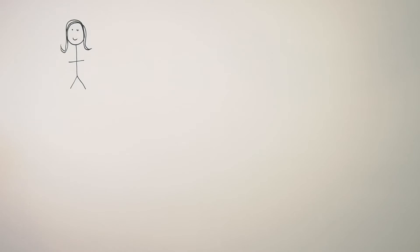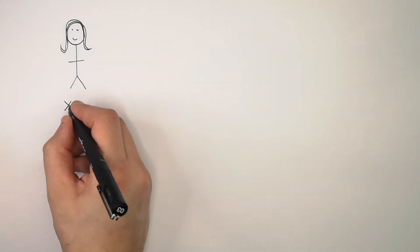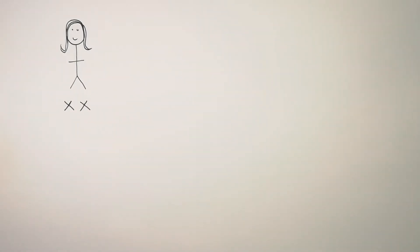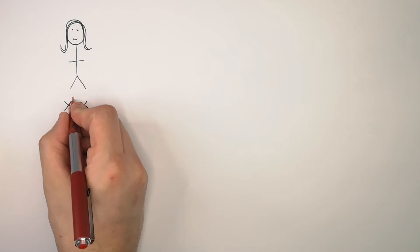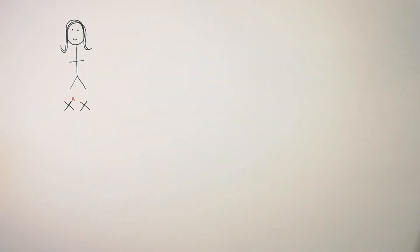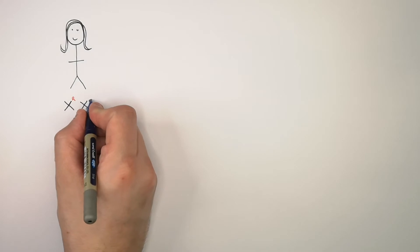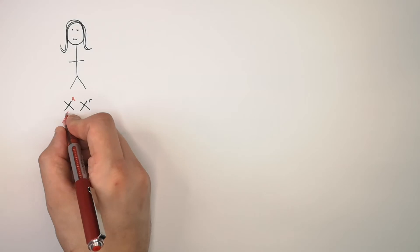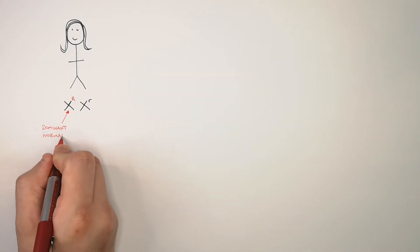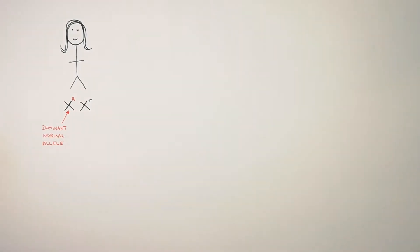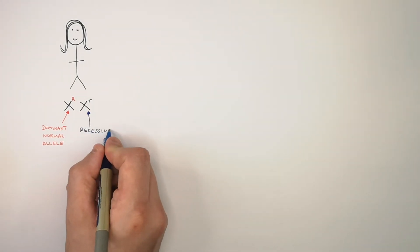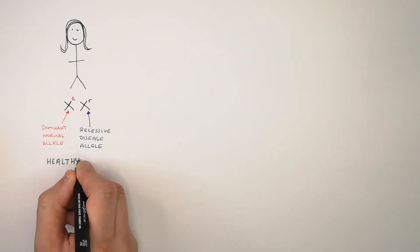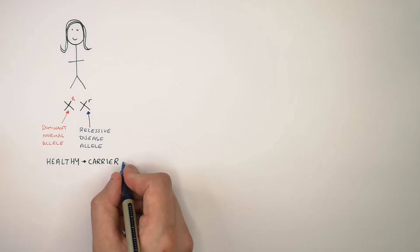Now let's look at the genetic cross diagram. This woman's chromosomes are XX. On one chromosome she carries the dominant allele, big R, and on her other X chromosome she carries the recessive allele for the disease. She is not suffering from the disease, but she is a carrier of the recessive allele.